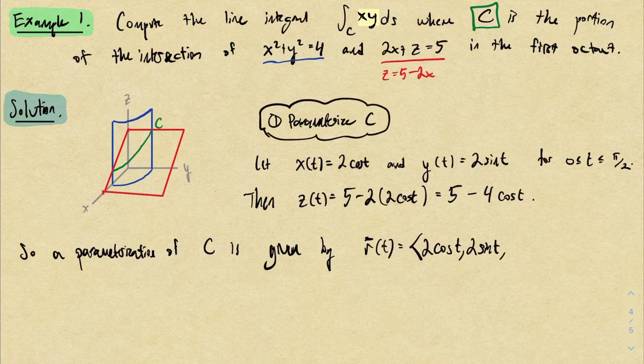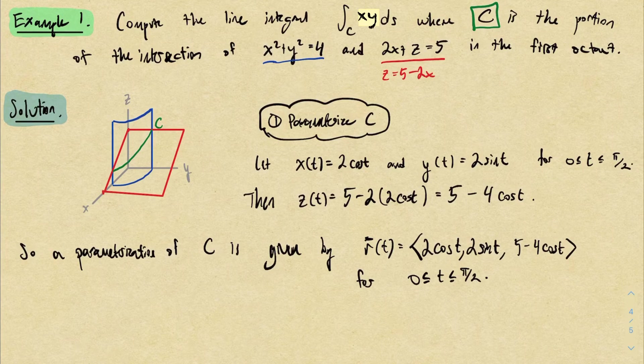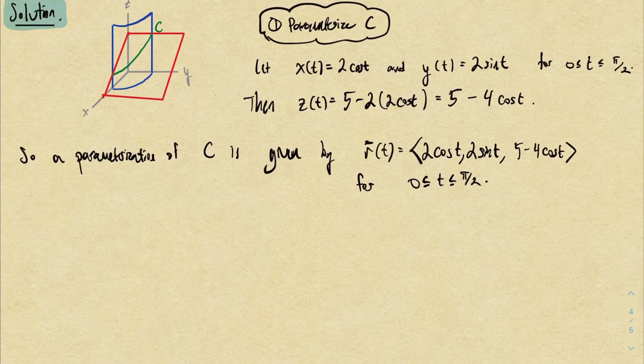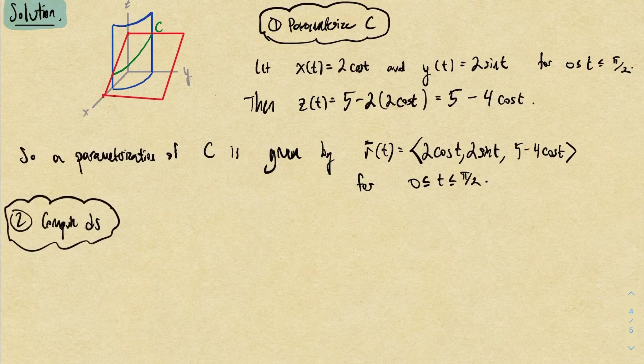r(t) is <2 cosine t, 2 sine t, 5 minus 4 cosine t> and the parameter domain is 0 to pi over 2. Is this the only parameterization that would work? Nope, you could do other things, but as long as you parameterize it correctly you should get the same answer in the end.